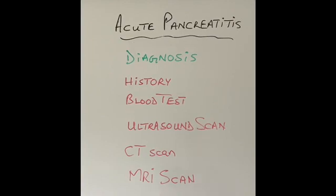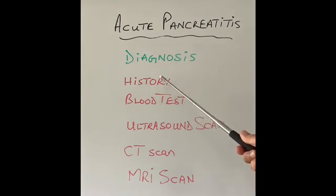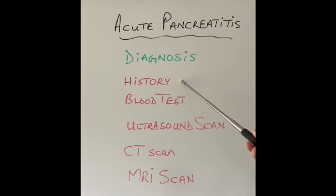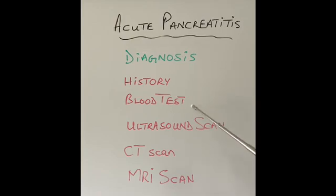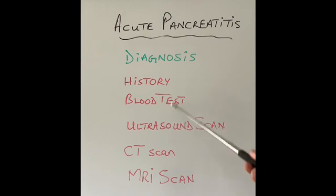When a patient comes in with severe abdominal pain going through to the back, the first step in diagnosis is taking a history — for example, a binge of alcohol before the episode, or a known history of gallstones. Certain blood tests are then done. There is an enzyme called serum amylase, which is secreted by the pancreas gland, and its levels go up quite high in acute pancreatitis.